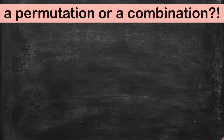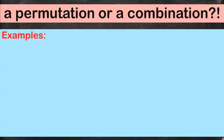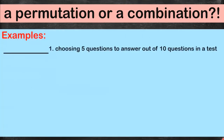We are going to determine if each given situation depicts a combination or a permutation. Let's have number one: choosing five questions to answer out of ten questions in a test.